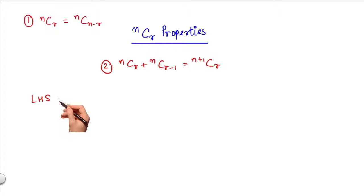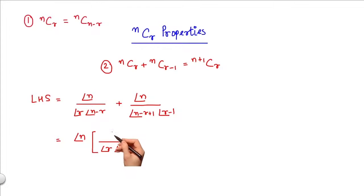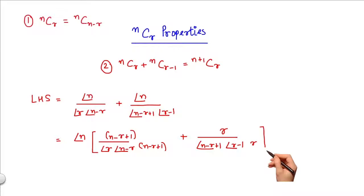The left hand side is given as N factorial divided by R factorial N minus R factorial plus N factorial divided by N minus R plus 1 factorial R minus 1 factorial. Now, I can take N factorial outside and then multiply and divide this first term with N minus R plus 1. Similarly, I can multiply and divide the second term with R. Now, it is clear I can combine these two terms to get N minus R plus 1 factorial and I can combine these two terms to get R factorial.